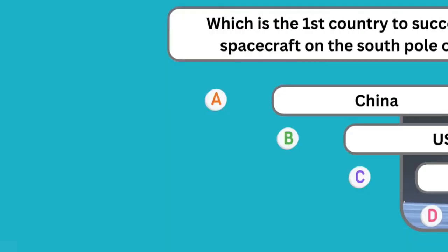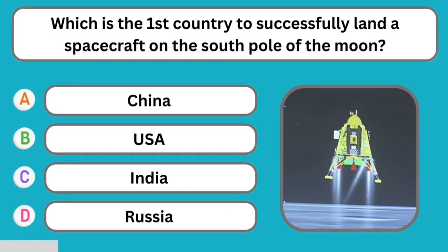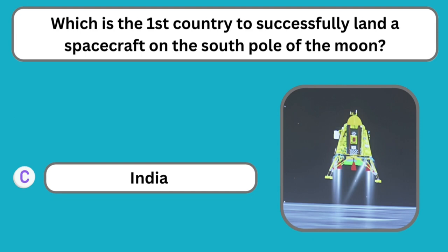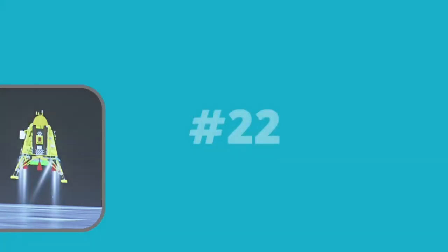Question number twenty-one: Which is the first country to successfully land a spacecraft on the south pole of the moon? The correct answer is India. India is the first country to achieve this.